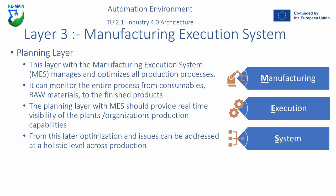Above layer two, you have your manufacturing execution system — the planning layer. This layer has a holistic view of all the production processes and can manage and optimize them, having them work in concert with each other. You can monitor the process from consumables and raw materials all the way to the finished product. The MES provides real-time visibility of the plant's and organization's production capabilities, and optimization and issues can be addressed at a holistic level across production from this layer.